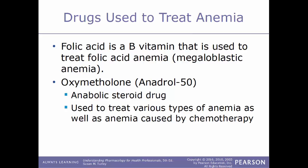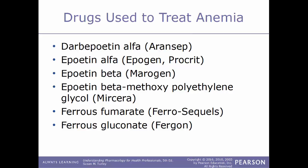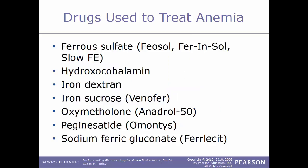An example of an anabolic steroid drug used to treat various types of anemia, including anemia caused by chemotherapy, is oxymetholone, also known as Anadrol-50. Other drug examples in this class include Aranesp, Epogen/Procrit, Mircera (epoetin beta), methoxy polyethylene glycol (Mircera), ferrous fumarate (Ferro-Sequels), ferrous gluconate (Fergon), ferrous sulfate (Feosol, Fer-In-Sol, Slow Fe), hydroxocobalamin, iron dextran, iron sucrose (Venofer), and sodium ferric gluconate (Ferrlecit).